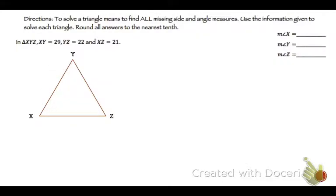Okay. So really, we're just putting everything together. That's all we're doing right now. Now let's look at this one. So we have triangle XYZ. XY is 29. YZ is 22. And XZ is 21.